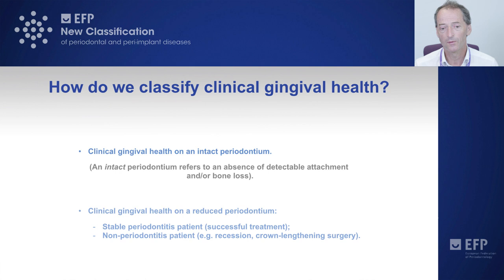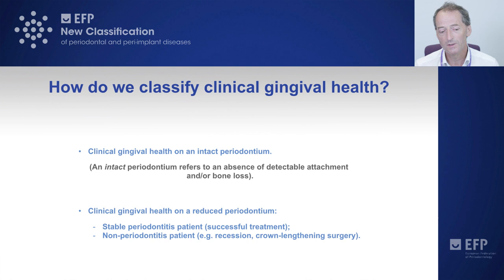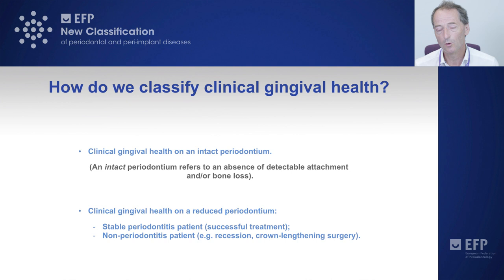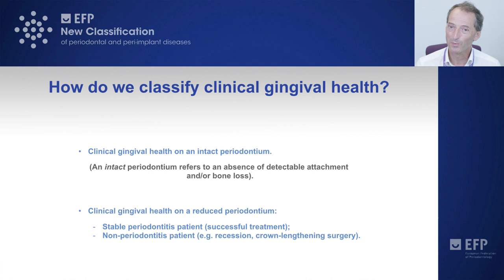How do we classify gingival health? We reduced the classification to clinical health on an intact periodontium and clinical health on a reduced periodontium. An intact periodontium refers to an absence of detectable attachment and/or bone loss, either by clinical probing or radiographic assessment. For the reduced periodontium, we could have clinical health in a stable periodontitis patient — one who had periodontitis successfully treated — or clinical gingival health on a reduced periodontium arising not due to periodontitis but for some other reason, for example surgical removal of a wisdom tooth or crown lengthening surgery. We felt it was important to discriminate the reduced periodontium due to periodontitis versus that not due to periodontitis, and the reason for that will become clear at the end of this presentation.